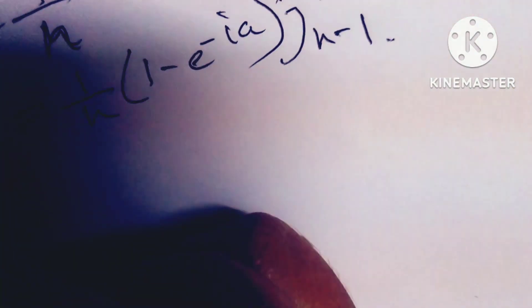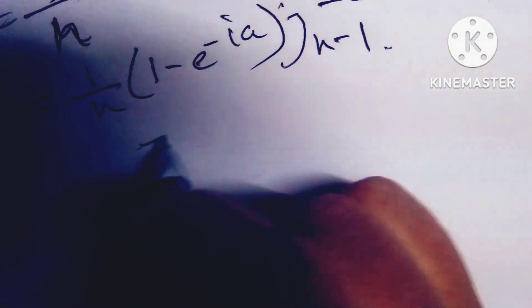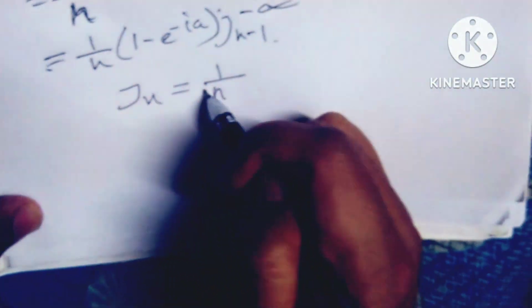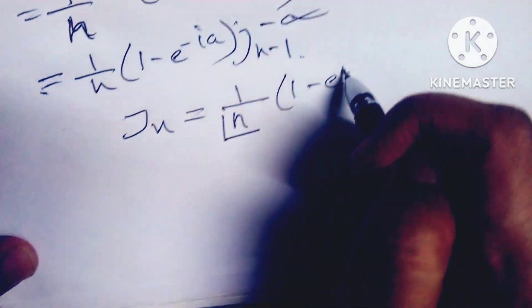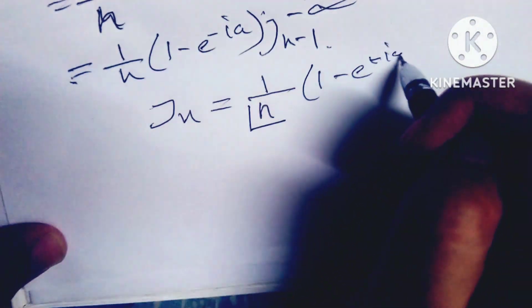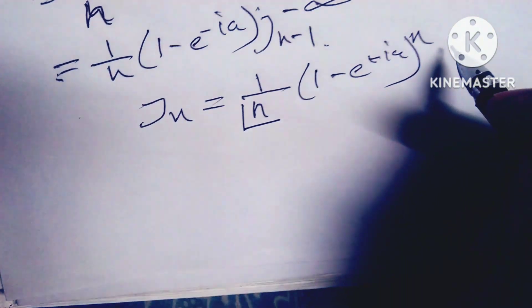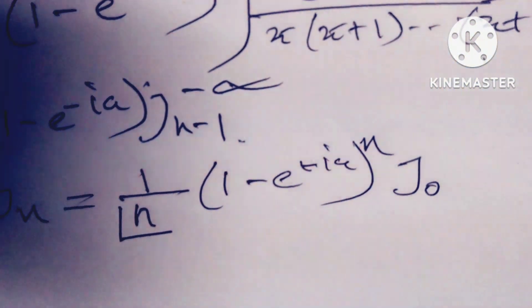Similarly, applying the recursion repeatedly, we get Jn equals (1/n!) times (1 minus e^(-ia))^n times J0.